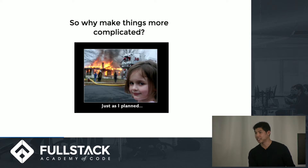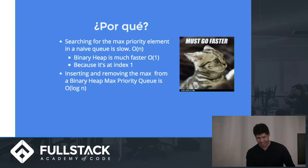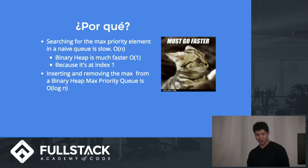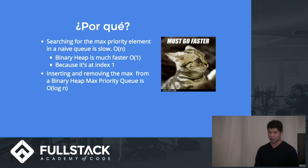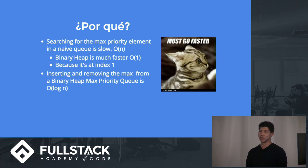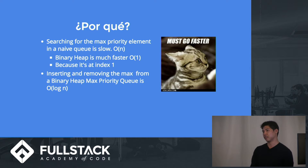So why bother with this? Why make things more complicated? It's actually much faster to implement a binary heap for a max priority queue instead of just a naive queue. If you want to find the max element in a naive queue, you have to iterate through the entire array to get the max element and then take it out. But in a binary heap, you know the max element is at index 1. And removing is also much faster — instead of O(n), it's O(log n) for a binary heap.